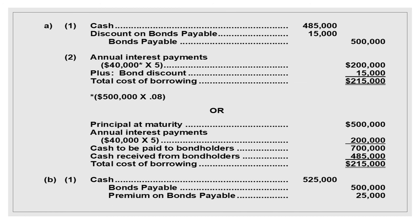The total cost of borrowing equals annual interest payment of $40,000 times five years = $200,000, plus bond discount $15,000, so total cost of borrowing = $215,000. Alternatively: principal at maturity $500,000 plus annual interest payments $200,000 = $700,000 cash paid to bondholders, less cash received from bondholders $485,000, giving total cost of borrowing $215,000. You can use either method.